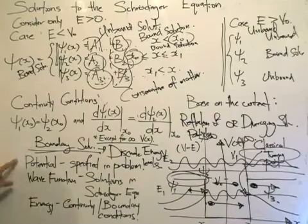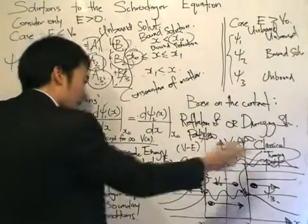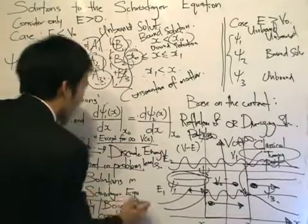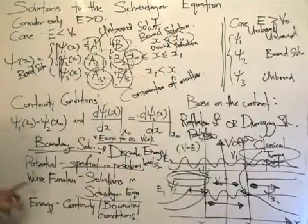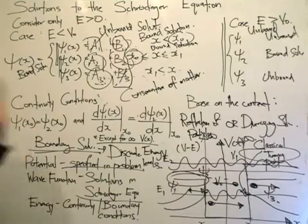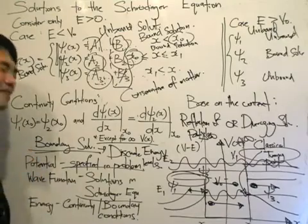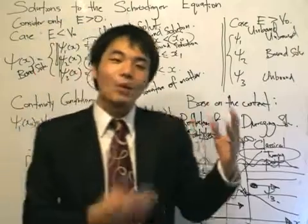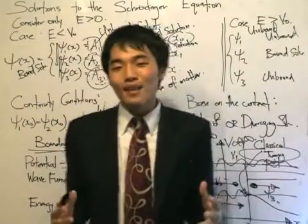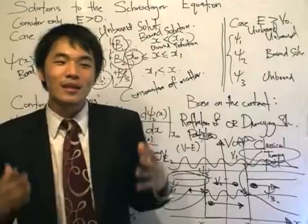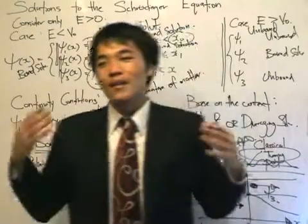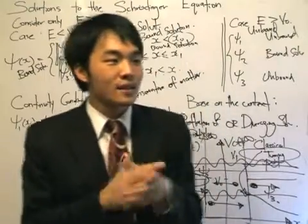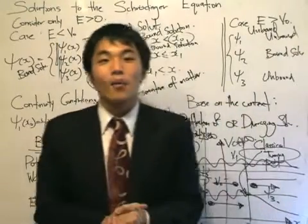So here is where we stand: we are given the potential specified in the problem, we want to find the wave function from the solutions to the Schrödinger equation by separating cases, and after that we find the energy using continuity and boundary conditions. We're going to go through topics like the finite square well, the infinite square well, the potential step, the potential barrier, and phenomena in quantum mechanics such as tunneling — how a particle can pass through a potential — and the discrete energy levels of the hydrogen atom.